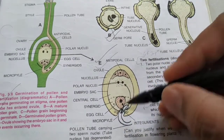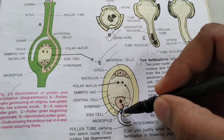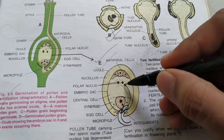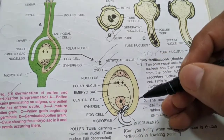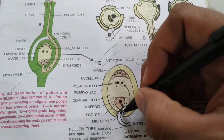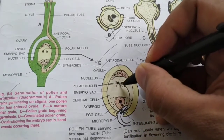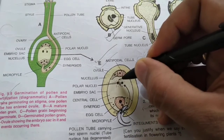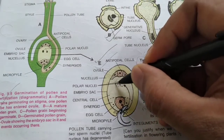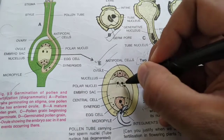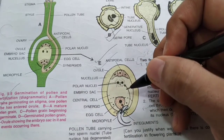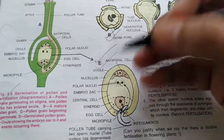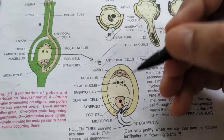The other male gamete fertilizes the two polar nuclei. Since three nuclei are fusing together, this second fertilization is called triple fusion. On this occasion, two fertilizations are taking place simultaneously.